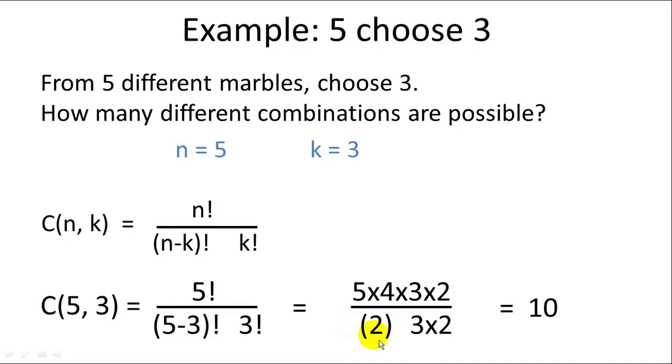So when we work out the math we can see three times two cancel each other out. We get five times four over two which is ten. So there are ten different possible combinations for the five choose three problem.